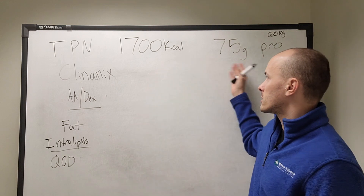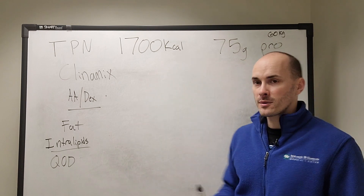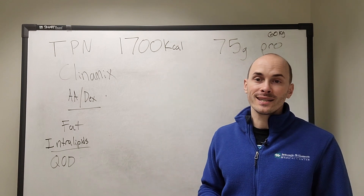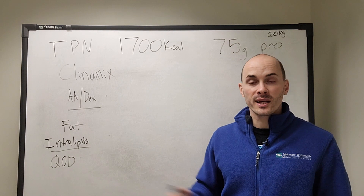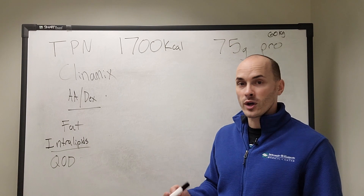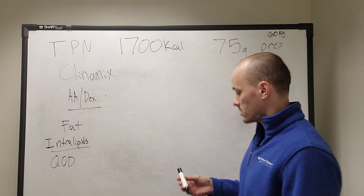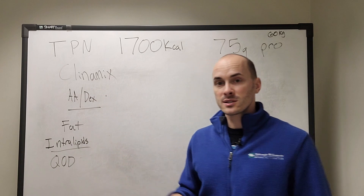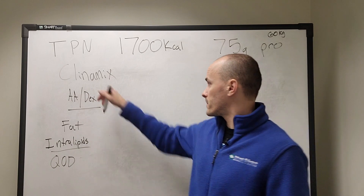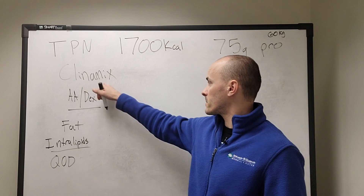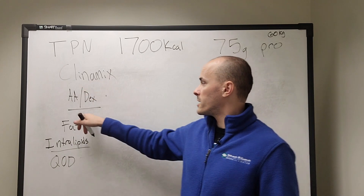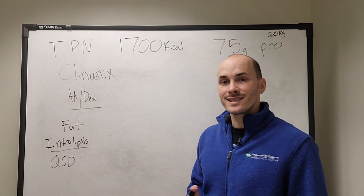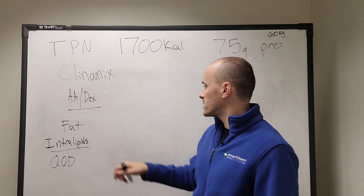Today we're going to walk through a hypothetical scenario with a patient that needs 1,700 kcals and 75 grams of protein. We're going to be using Clinimix, which is a TPN product — it's a pre-mixed dextrose and amino acid containing fluid.